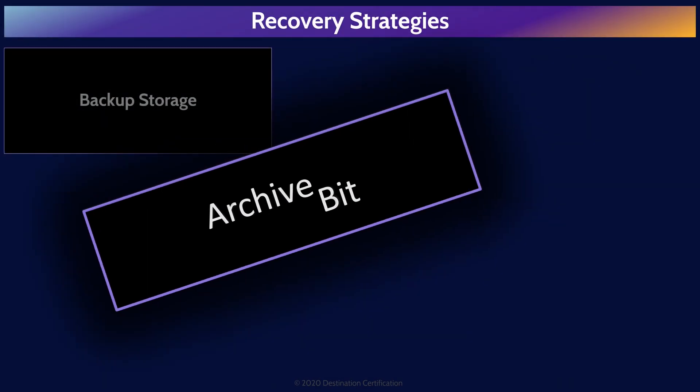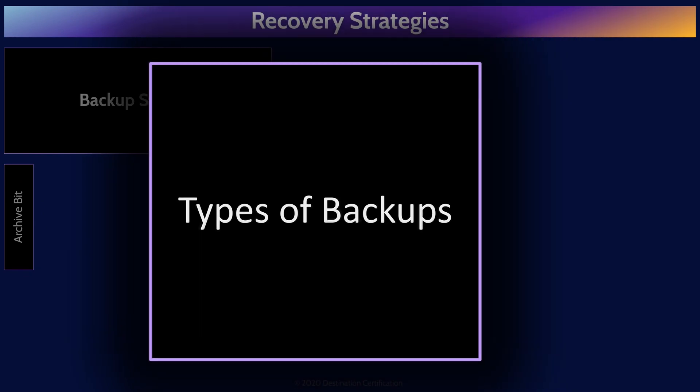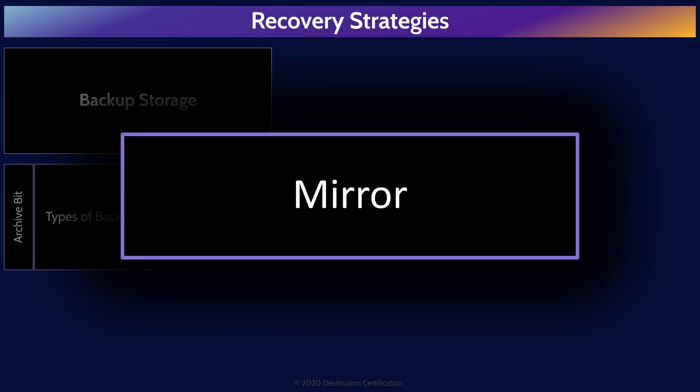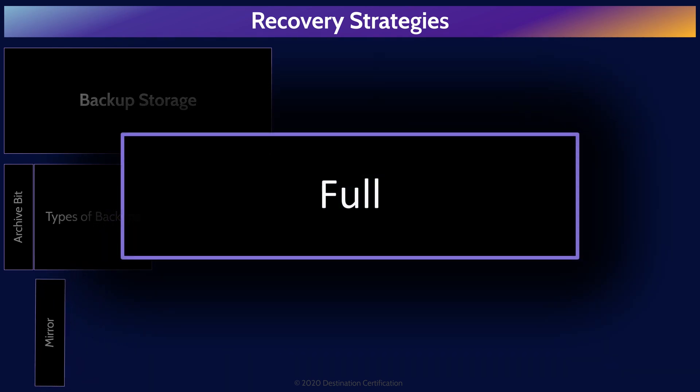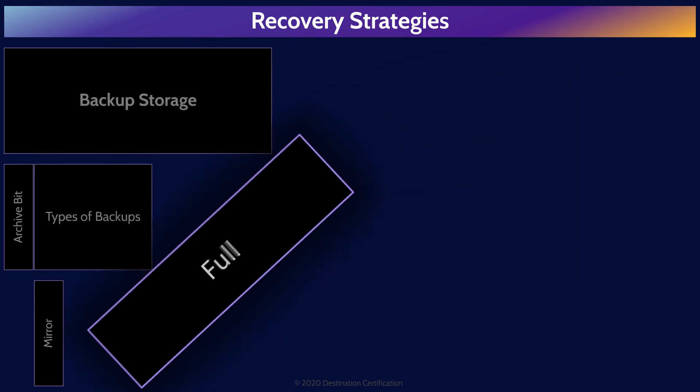Now let's talk about different backup strategies. Mirror backups, also known as stream backups, is an exact copy with no compression — no attempt to shrink the backup file size — meaning mirror backups are very fast but use a lot of storage space. Full backups are where every file is backed up regardless of what the archive bit is set to. Full backups employ compression, so they're not as fast as mirror backups.